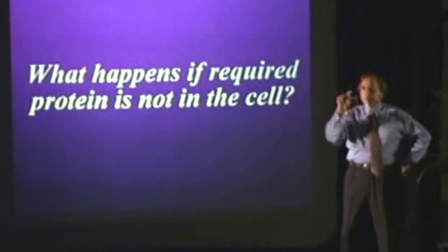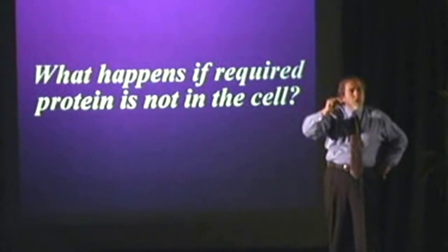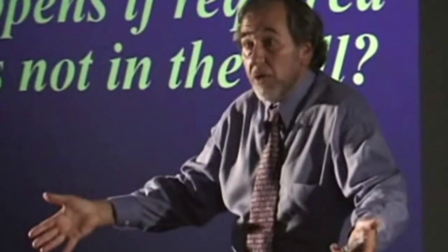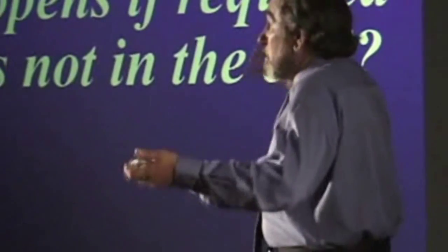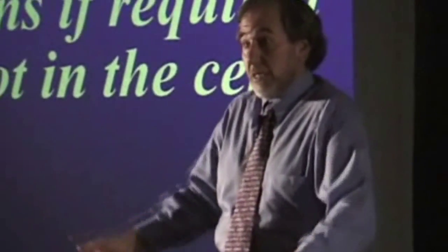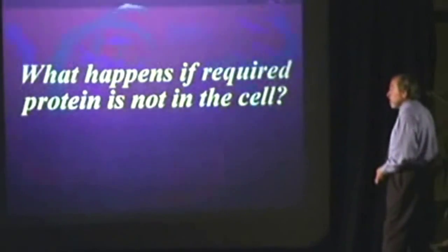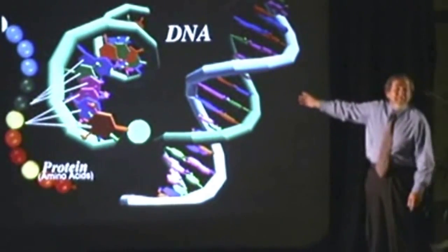The bottom line was this: the behavior of the cell is not programmed. The behavior of the cell is continuously adjusting to whatever the signals are in the environment. So now I've got another question to ask you. What happens if that environmental signal shows up, but I don't have the proteins necessary in the cell right now for that event? Where do we get the behavioral proteins? Now we bring the DNA back in.